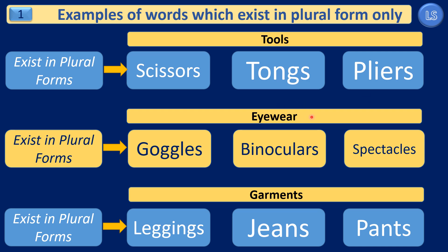The second subsection covers eyewear items. The words which come under this category are goggles, binoculars, and spectacles. Goggles and spectacles are the same — they are glasses used to improve our eye vision. Binoculars are objects used to see distant objects. We don't call them goggle, binocular, or spectacle, because these words always exist in plural forms.